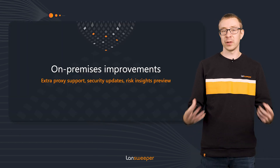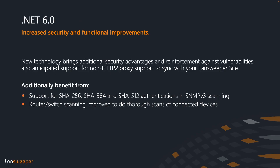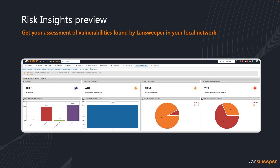We have added a few more on-premise improvements as well, starting with upgrading the backend of the on-premise to .NET 6.0, which brings increased security and also some increased functionality — meaning there is now proxy support for syncing your local Lansweeper on-premises with your Lansweeper site. On top of that, we have the Risk Insights preview, where you can preview data from your Risk Insights module if you have a link to the cloud.